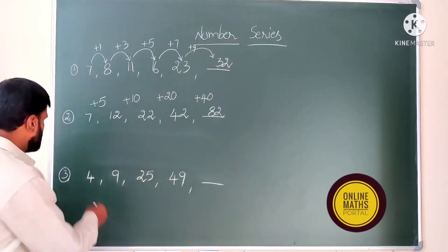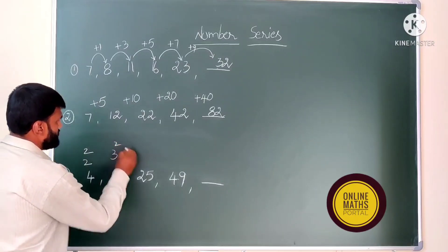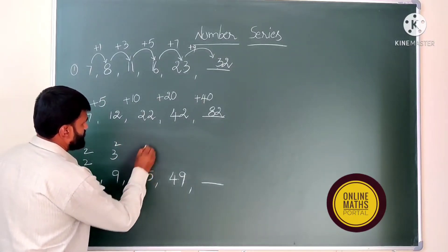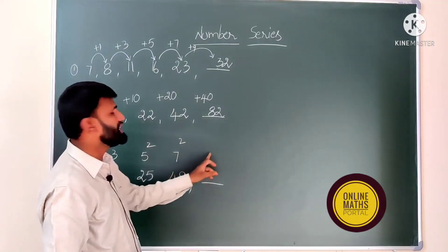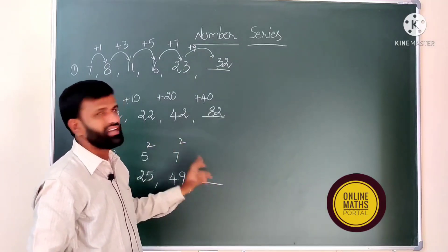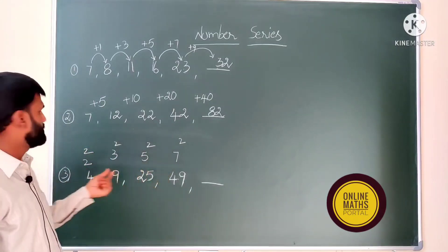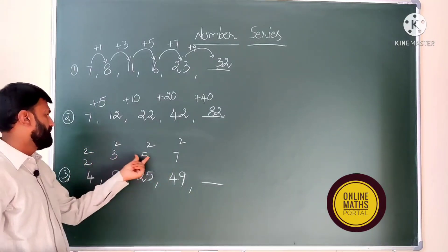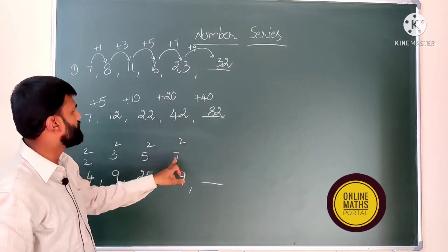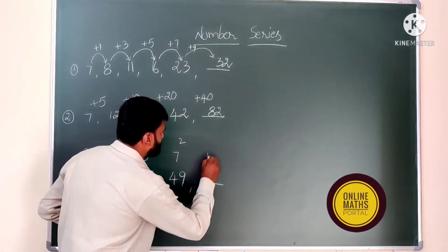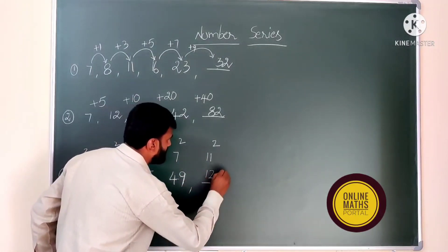But if 78 is not in the options, we should check squares. If you observe: 4 is 2 squared, 9 is 3 squared, 25 is 5 squared, 49 is 7 squared. So 2, 3, 5, 7 are all prime numbers. The next prime number after 7 is 11, so 11 squared is the required number. 11 squared is 121.